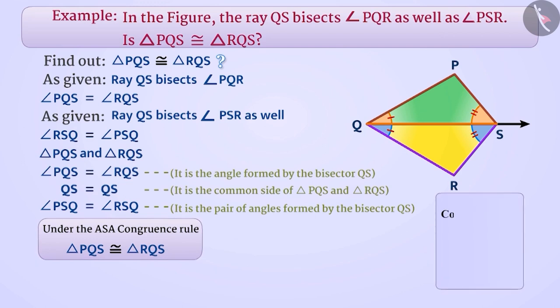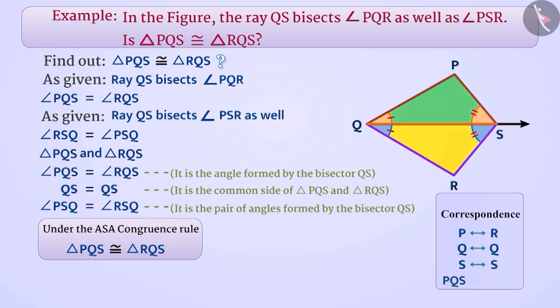Under the correspondence: P is correspondent to R, Q is correspondent to Q, S is correspondent to S, and triangle PQS is congruent to triangle RQS. Always remember to pay attention to correspondence while showing the congruence relation.